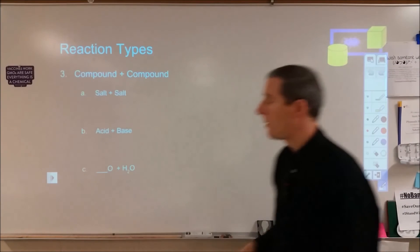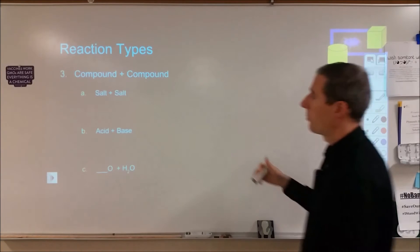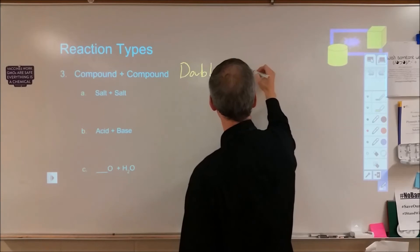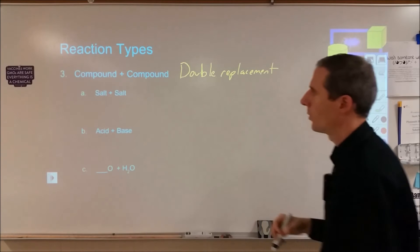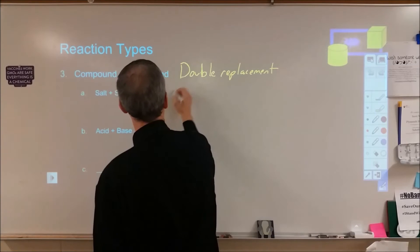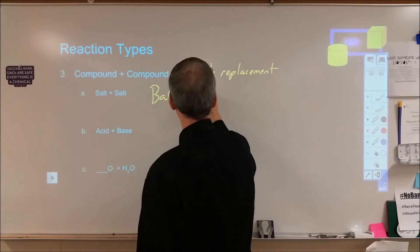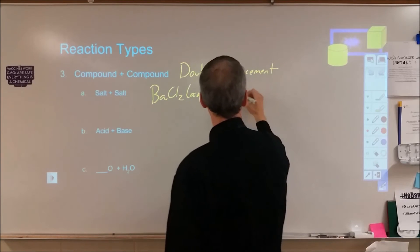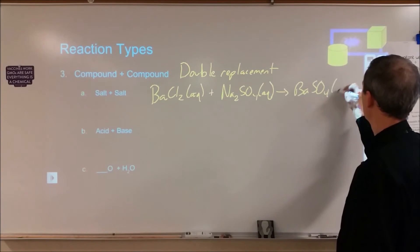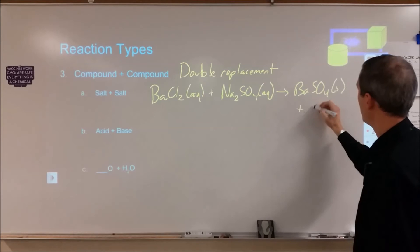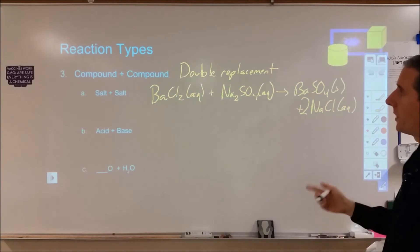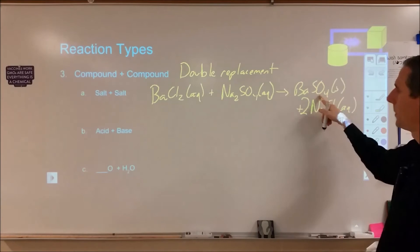If you have an element and a compound, single replacement is probably what you're looking for, unless it's combustion — which is pretty easy to tell apart. Now if you have two compounds added together, you're probably looking at double replacement. For example, a salt and a salt: if we're looking at barium chloride solution mixed with sodium sulfate solution, we're going to form barium sulfate plus sodium chloride. That's our double replacement reaction — we form a precipitate when we do that.